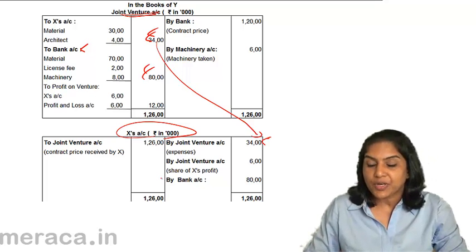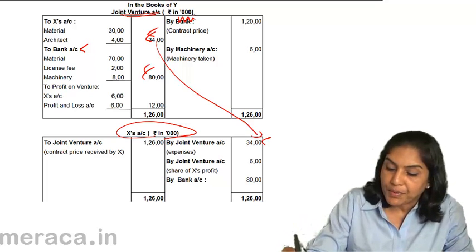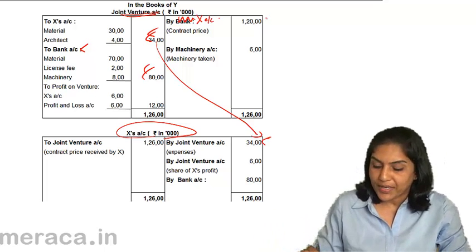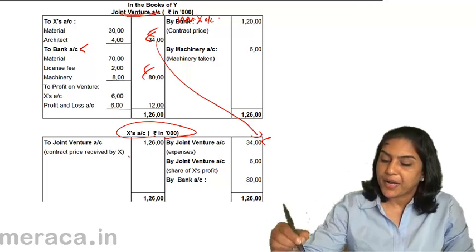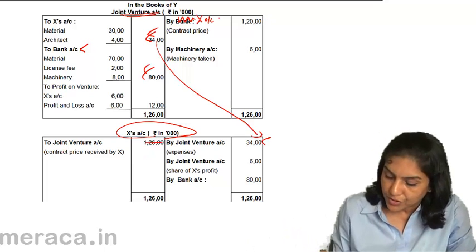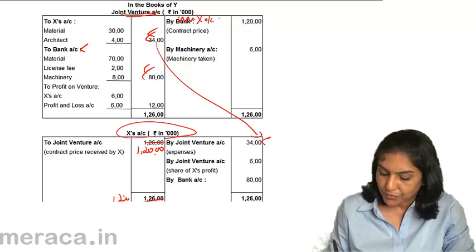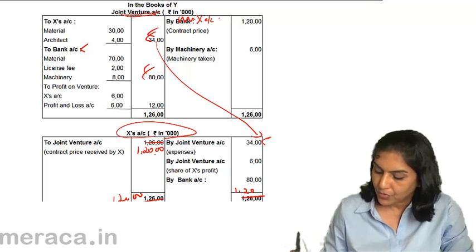The contract price was actually received by X, so in Y's books the entry would not be 'by Bank' but 'by X's Account' — X's Account credit, 1 crore 20 lakhs. The total would therefore be 1 crore 20 lakhs.